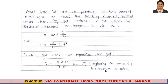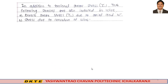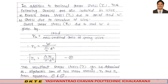Neglecting the stress due to curvature of wire. In addition to torsional shear stress tau1, the following stresses are also induced in the wire: first, direct shear stress tau2 due to axial load W, and stress due to curvature of wire. Direct shear stress tau2 due to load W is given by tau2 equals load upon area, which is W divided by pi/4 times d squared, giving tau2 equals 4W upon pi d squared. This is equation number 2.